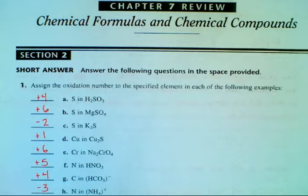In G, carbon is going to be a plus 4. And in H, nitrogen is going to be a minus 3.